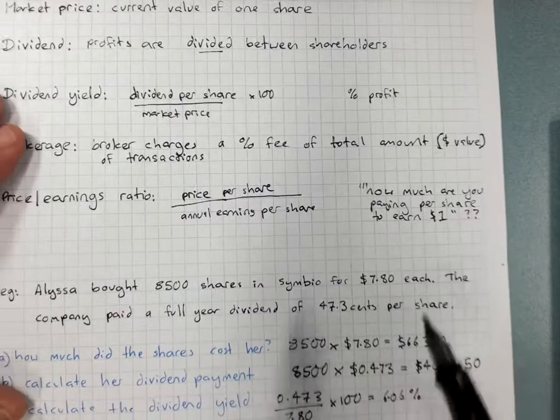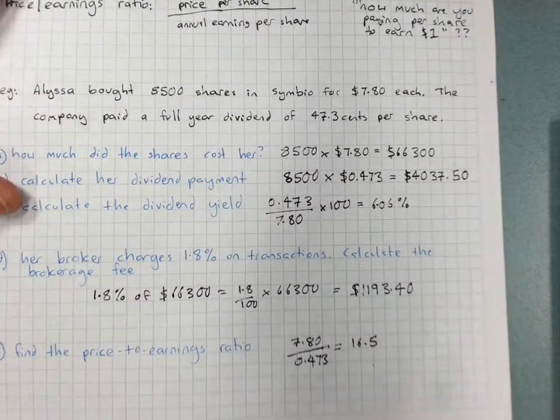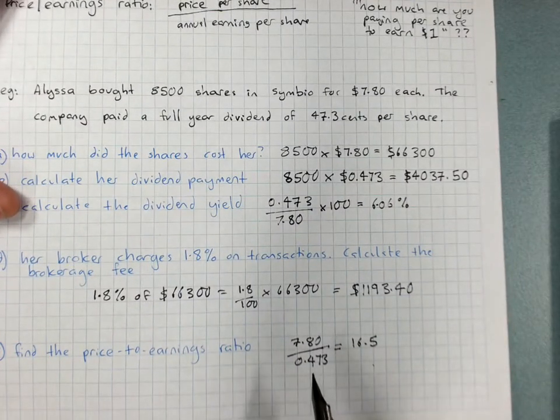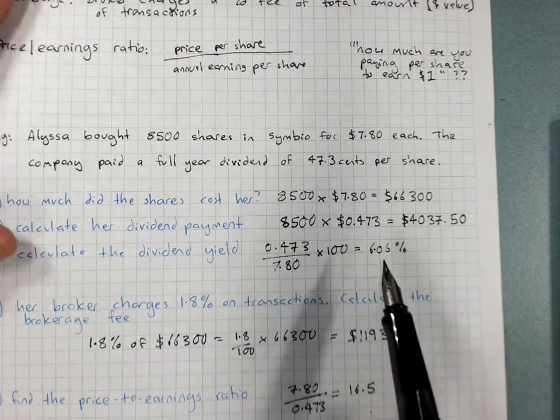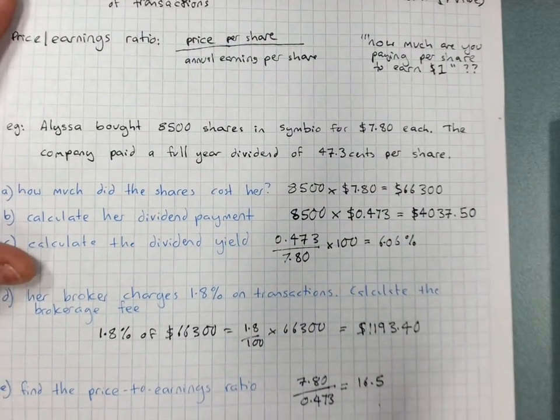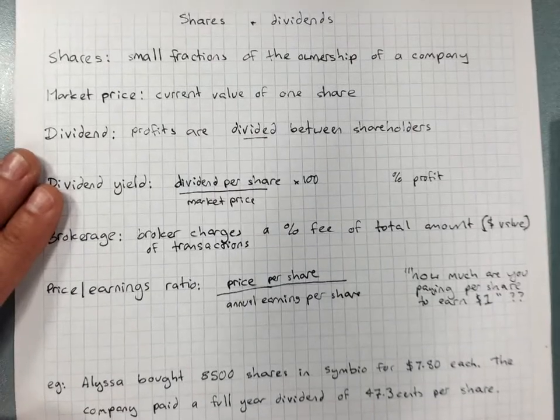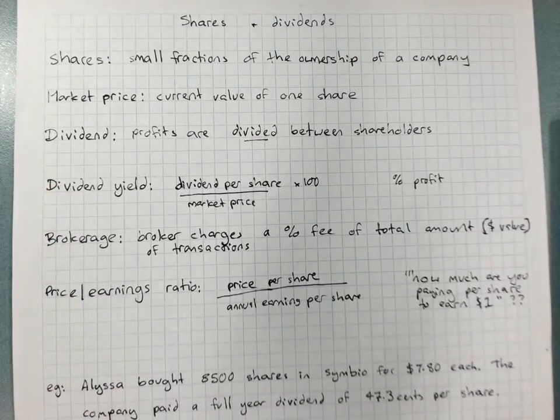So, how much you're paying to earn a dollar? 16.5, but we're not looking at a terribly bad rate of investment there. So, that is a little overview of shares and dividends.